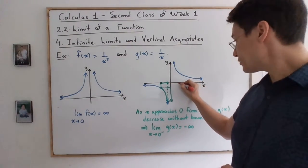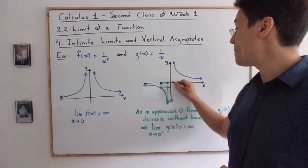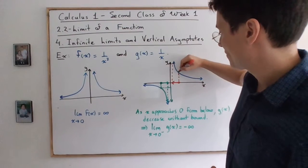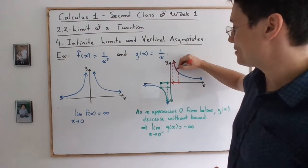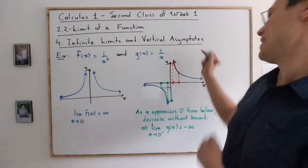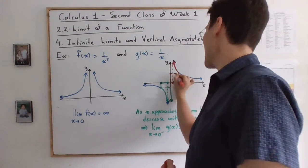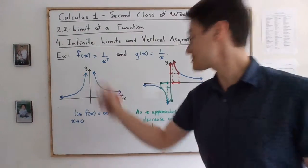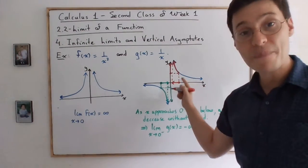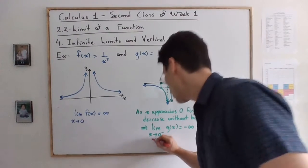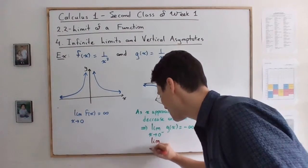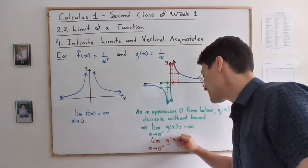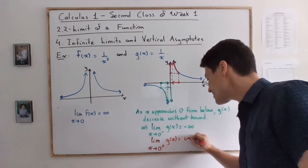Now as you try to approach 0 from above, you look at the curve and you just follow this curve. You see that y is growing without bounds. And this is the same behavior as f, but it's followed only from that one side. So we can say that the limit as x is approaching 0 from above of g(x) is equal to positive infinity.